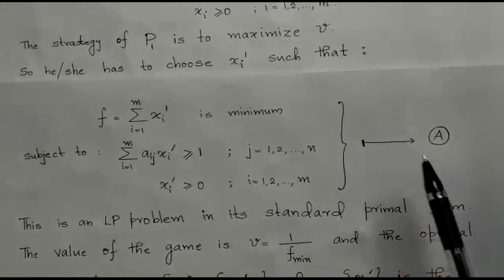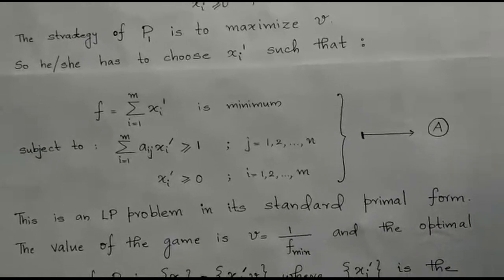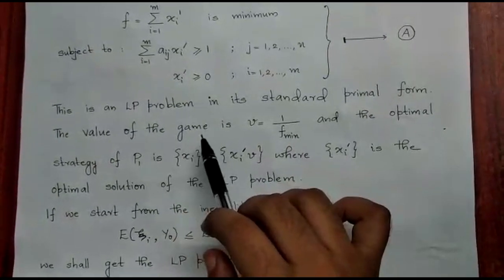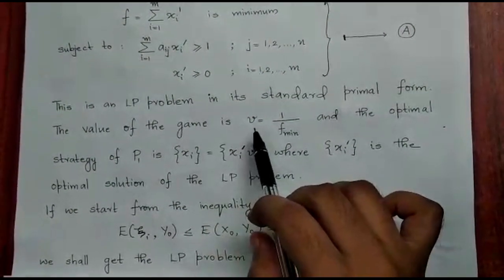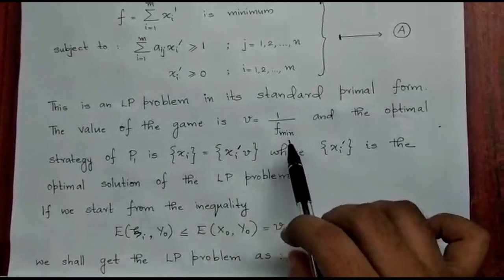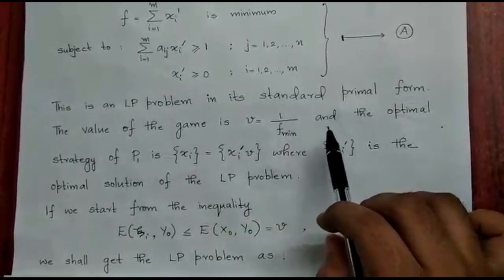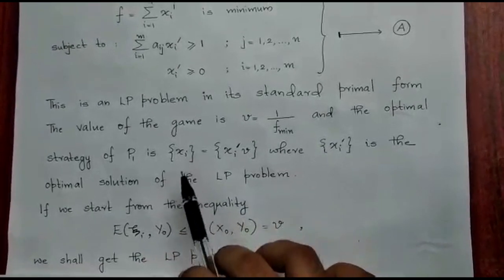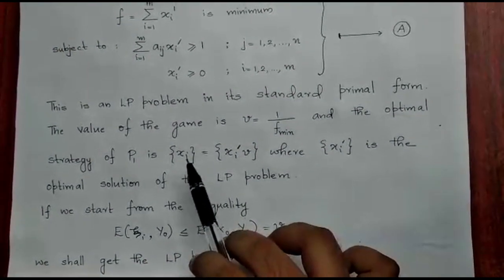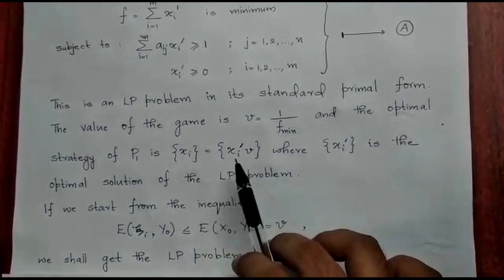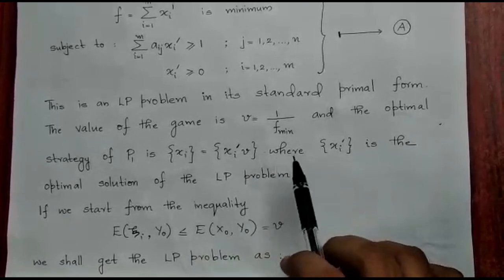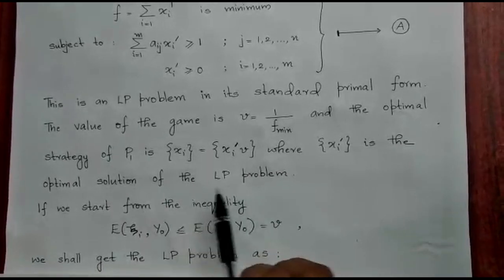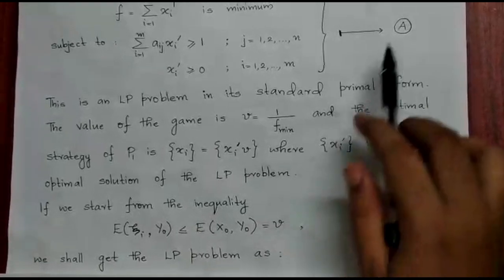Let this be relation A. We see the value of the game V is 1 by F minimum, and the optimal strategy of P1 is Xi where Xi equals Xi prime dash times V, and Xi prime dash is the optimal solution of the LP problem A.